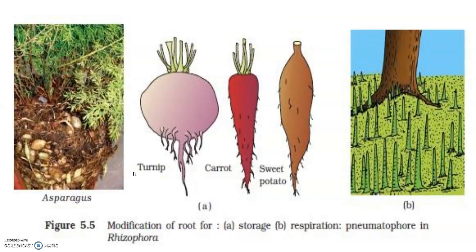Modifications of root. Roots in some plants change their shape and structure and become modified to perform functions other than absorption and conduction of water and minerals. They are modified for support, storage of food, as well as respiration. The tap root of carrot, turnip and sweet potato, and the adventitious roots of sweet potato, get swollen and store food.